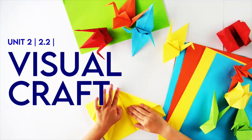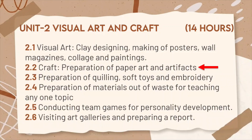Hello dear students, welcome to the platform of Teacher Educator. Today we are learning about activity 2.2 from the unit Visual Art and Craft of your USPY paper. In the previous video we learned about 2.1, its basic information and the manner of writing in the record book. Activity 2.2 is preparation of paper art and artifacts.